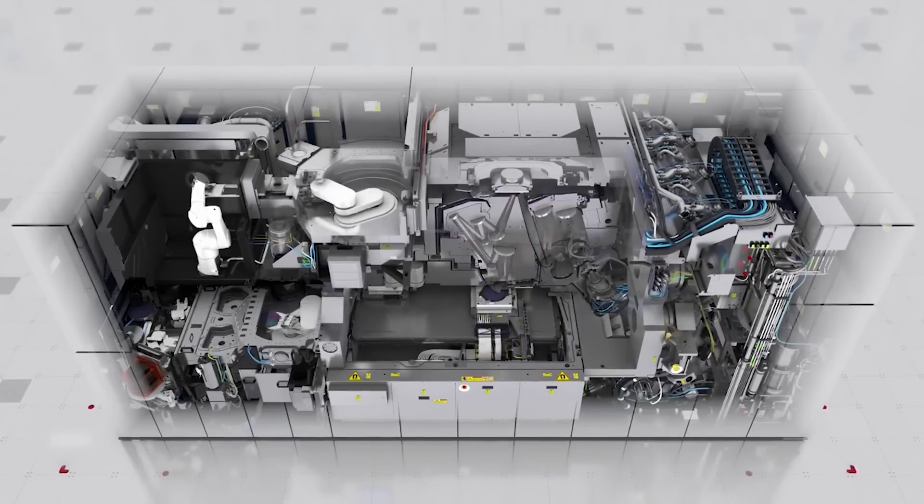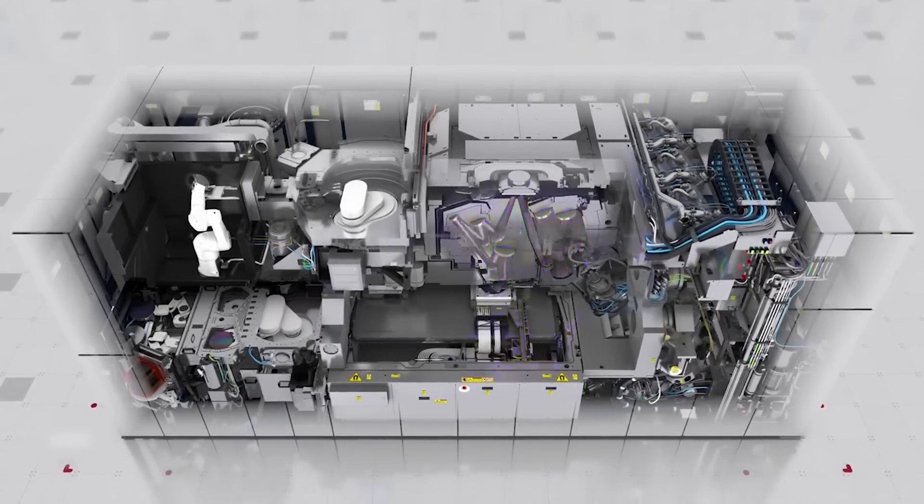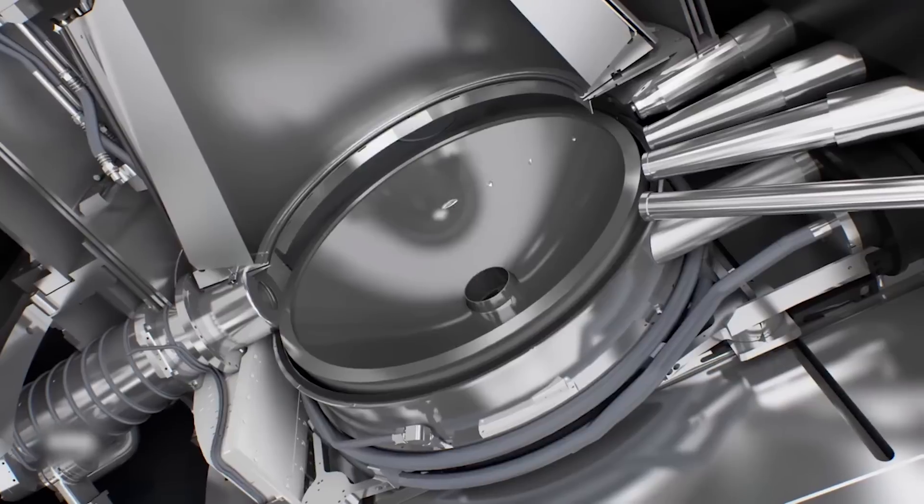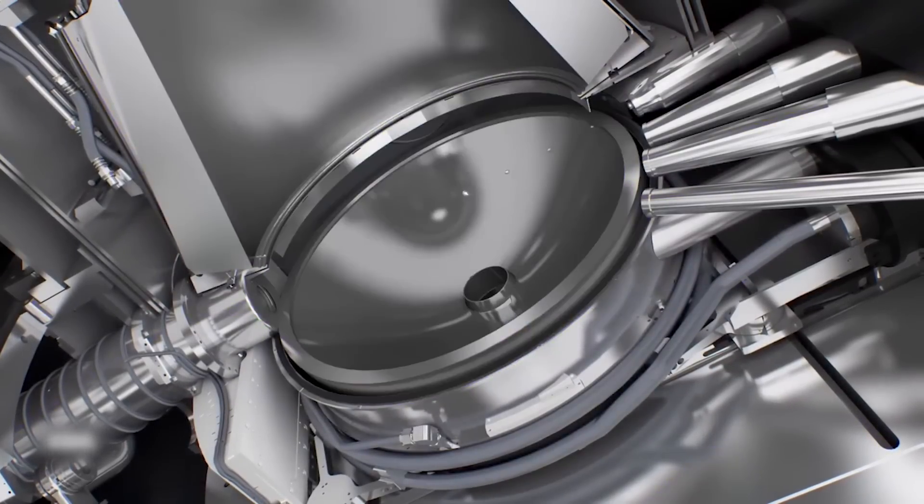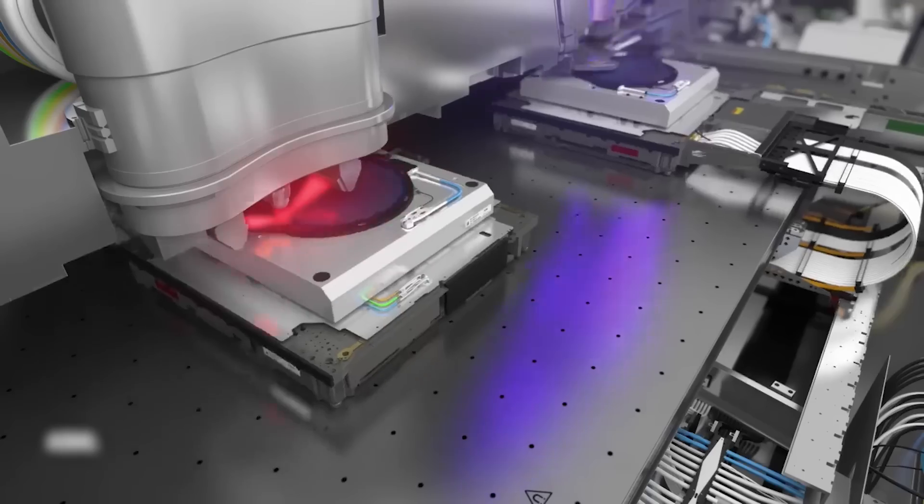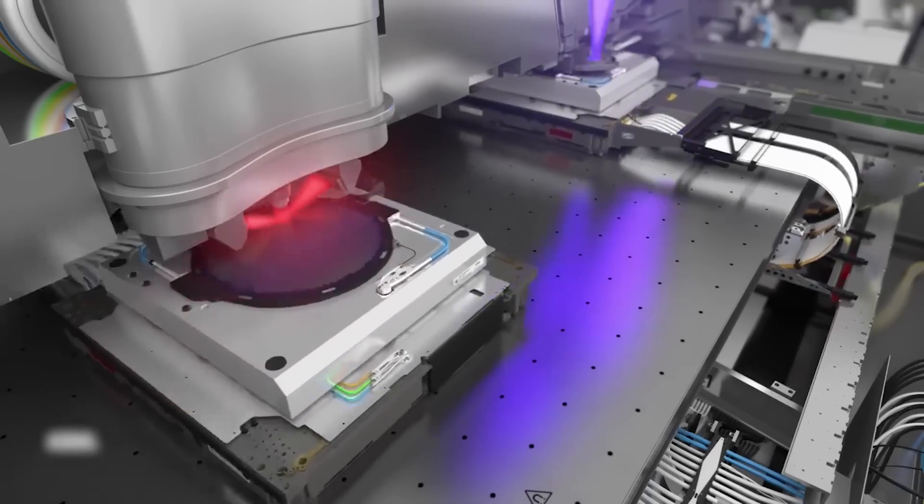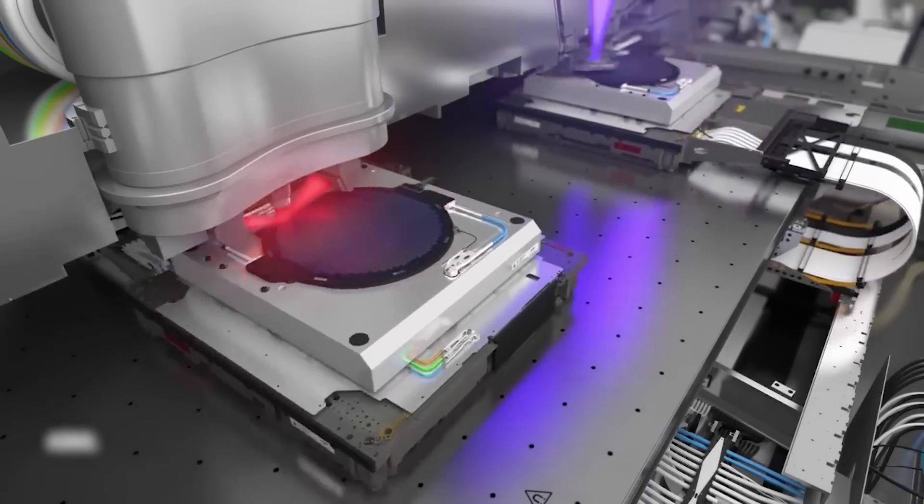ASML EUV uses a radical way to create light. Laser pulses firing 50,000 times a second at a drop of tin, vaporizing it, creating a plasma that emits 13.5 nanometer EUV light, nearly x-ray.